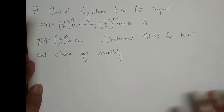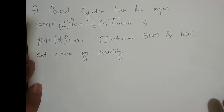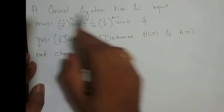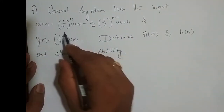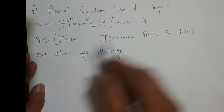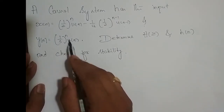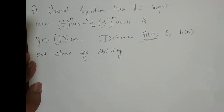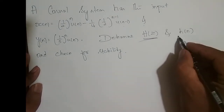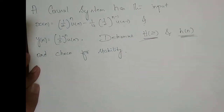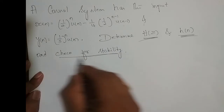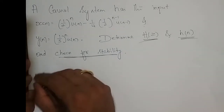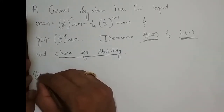We shall take one more problem on transform analysis of an LTI system. The problem involves a causal system where the input x(n) and output y(n) equal (1/3)^n u(n) are given. Our aim is to find the system function H(z), find the impulse response h(n), and check whether the given system is stable or not.